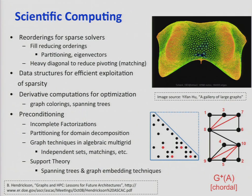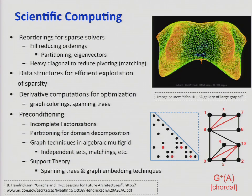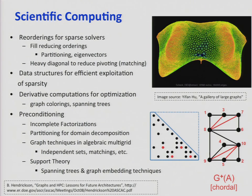Question: is the last one referring to the Spielman-Teng algorithm? Yes, it is. There's a long history of algorithms until then, but I think Spielman-Teng is the latest. And when you talk about derivatives, the programs that automatically compute them — you give it the program and it generates a new program that computes the derivatives — rely on graph coloring. Computing derivatives by hand is most efficient but you're going to make mistakes with 20 variables and millions of equations.